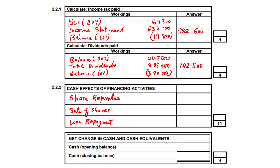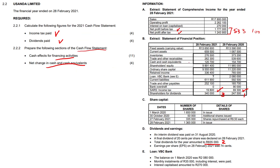When you crunch those numbers, you should get 742,500 as your dividends paid for the year. Nothing too heavy about those at all. Now let's move on to cash effects of financing activities. There's a share repurchase, there's a sale of shares, and there's a loan repayment as well. Let's take them one at a time.